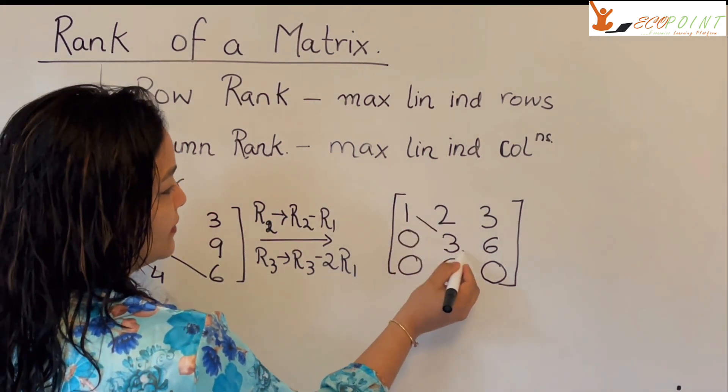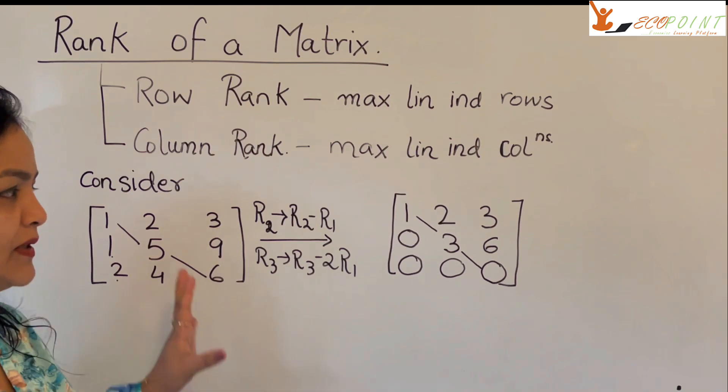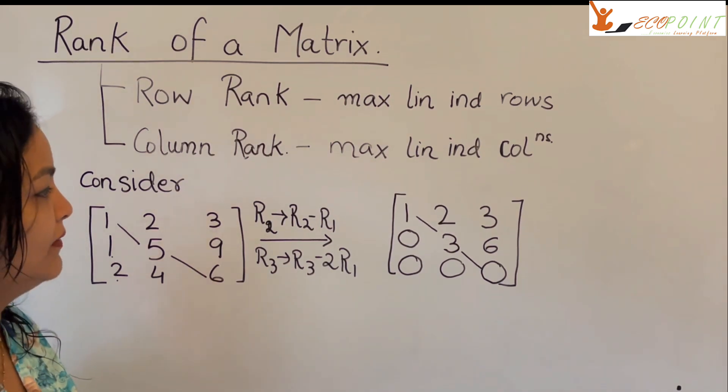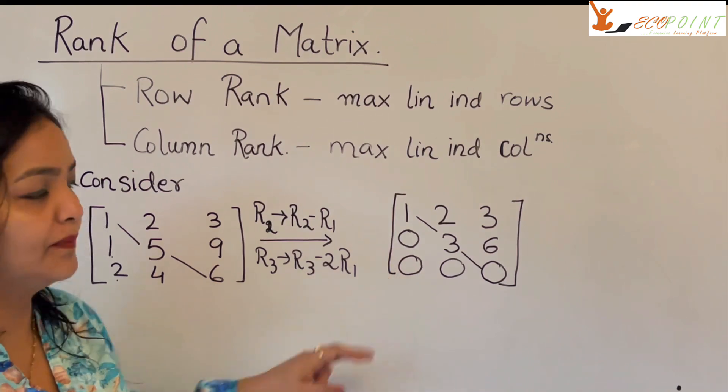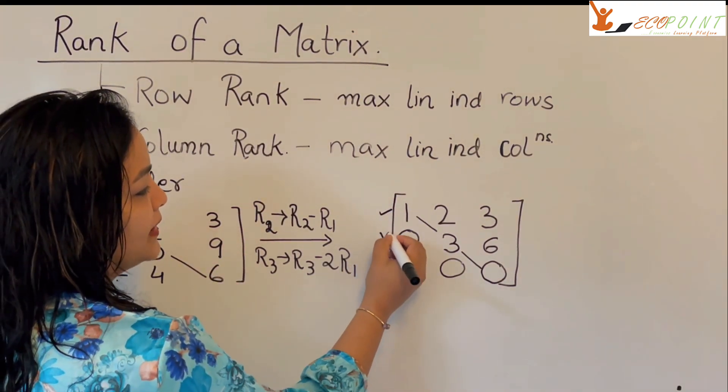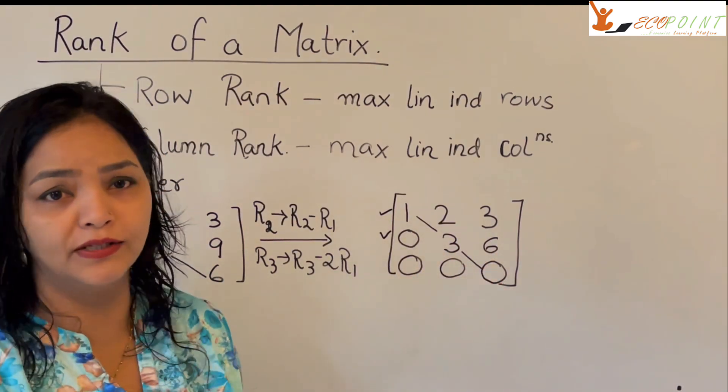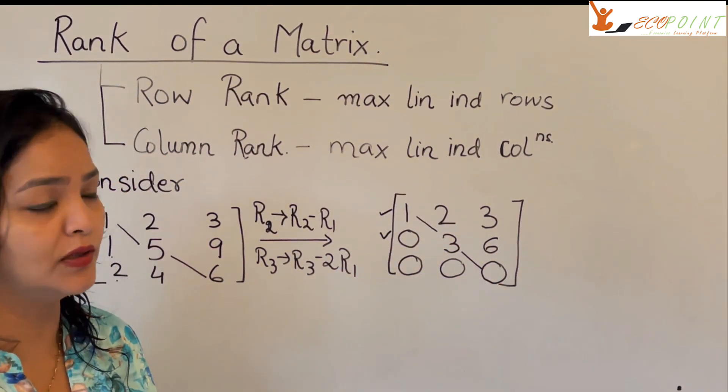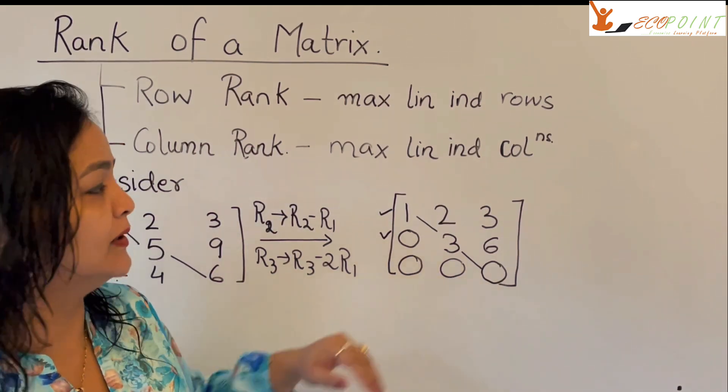So, what we have is just with using the row operations one time, this was a very simple case. Now, I have linearly independent rows with me. From this system, what we realize is that this row and this row, they're linearly independent because you cannot make the second row 0 by using any row operation. The row that you could make 0 is now the bottom most one here.